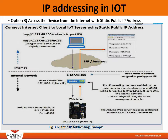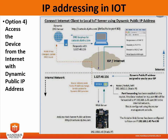Option 4 is accessing devices from the internet with a dynamic public IP address. One of the most common ways of dealing with dynamic WAN IP addresses is the use of Dynamic DNS services. Some of these services are free but most require a monthly payment. Most routers these days support third-party dynamic DNS service providers, and you configure the router with the provider username and password.